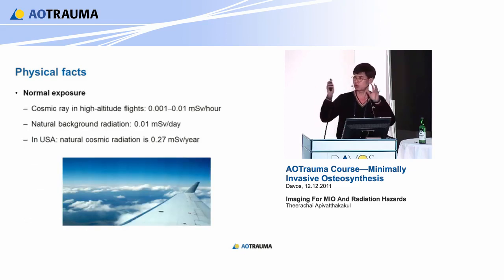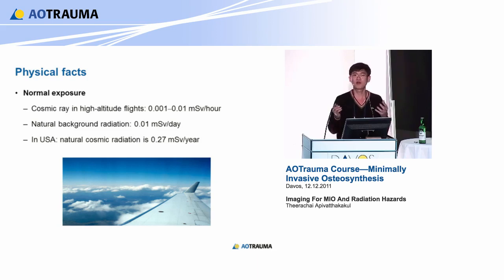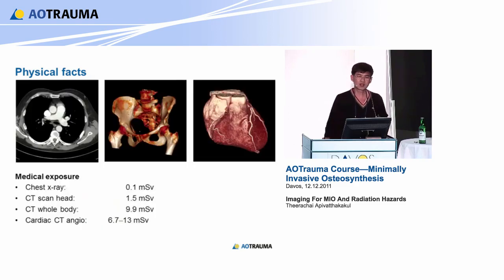Just have a look when you come to Davos - it's nice, but you have to know there's cosmic ray radiation there. If you fly to Davos at high altitude, you have more radiation exposure. In the US, the normal background radiation is around 0.2 millisieverts - you are already exposed to this radiation every year, but it's very low. How about medical exposure? A chest X-ray is only 0.1 millisievert. CT scan of the head is 1.5. A whole body CT is almost 10 millisieverts.